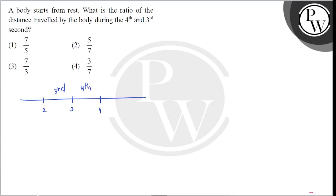So, we know that S nth is equal to u plus 1 by 2a into 2n minus 1. Initial velocity is 0. This is 1 by 2a into 2n minus 1. So we know that S 3rd is equal to 1 by 2a into 3 minus 1. That is, 6 minus 1 is 5 by 2a.